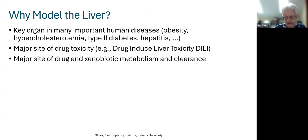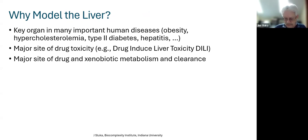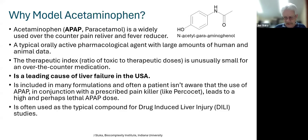I'm going to be talking largely about the liver. The liver is the center of metabolism in the body; it's the key clearance organ for both drugs and xenobiotics and a common source of injury. Drug-induced liver toxicity is a common problem for both therapeutics and xenobiotics. I'll be discussing acetaminophen as our model compound — I'll call it APAP, for N-acetyl-para-aminophenol. It's a widely used over-the-counter analgesic and a leading cause of liver failure in the USA, with a very narrow therapeutic index.